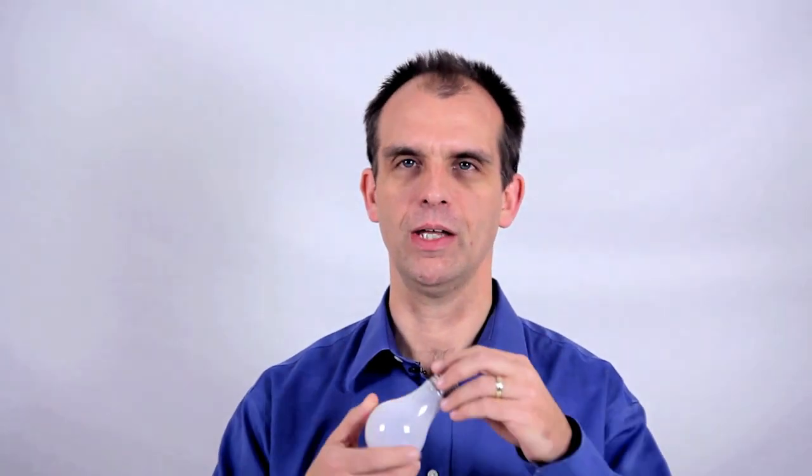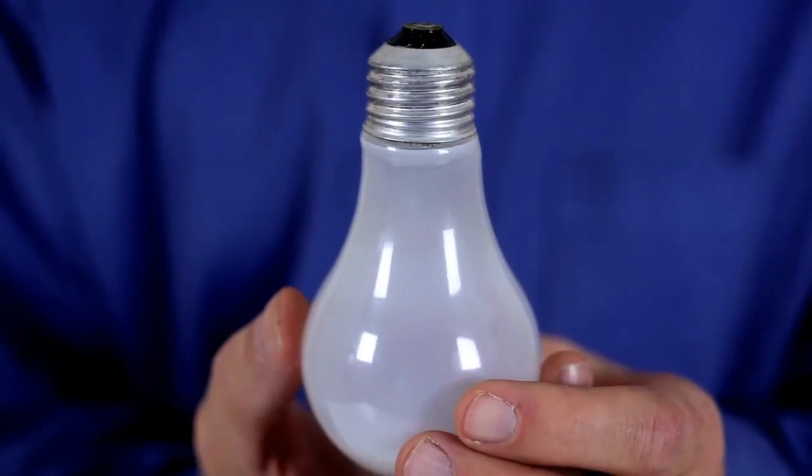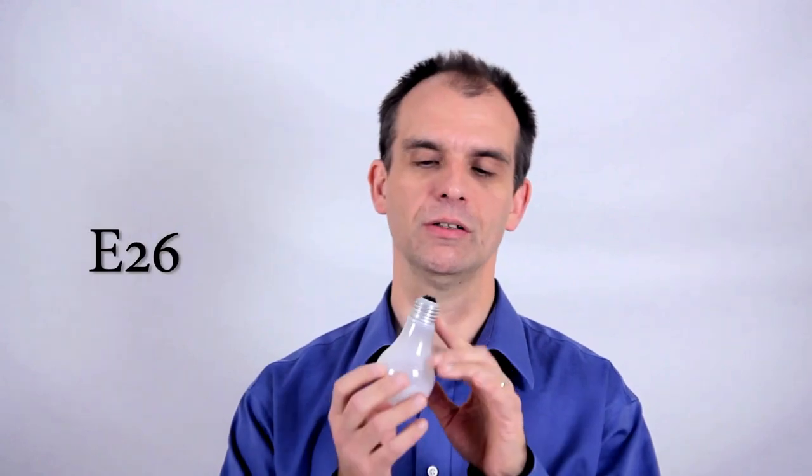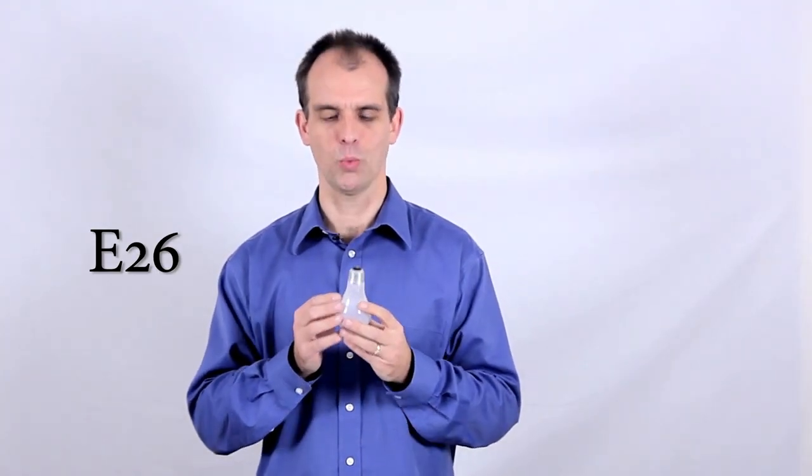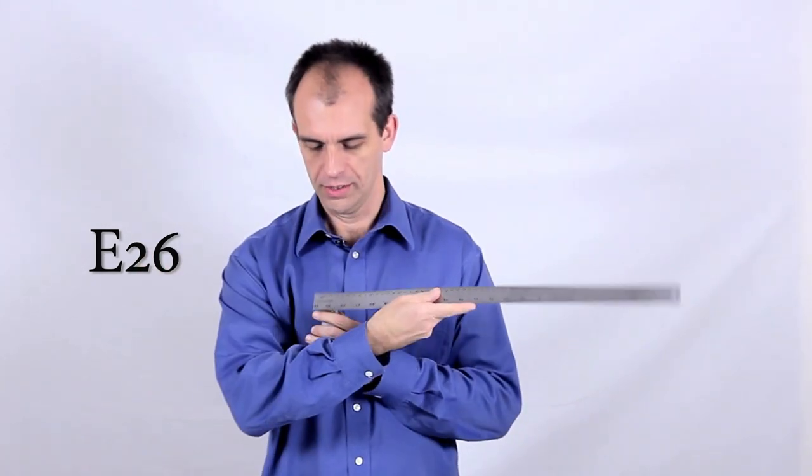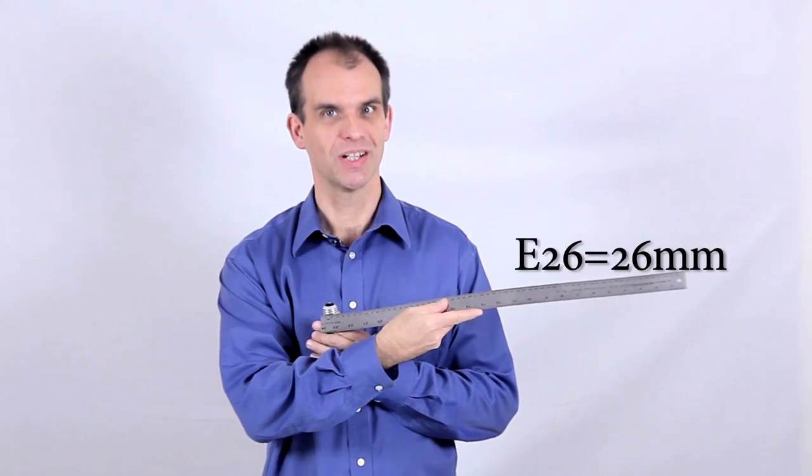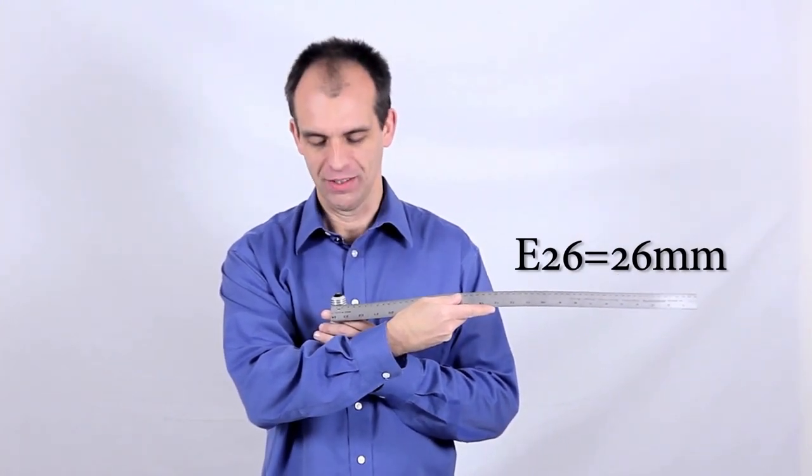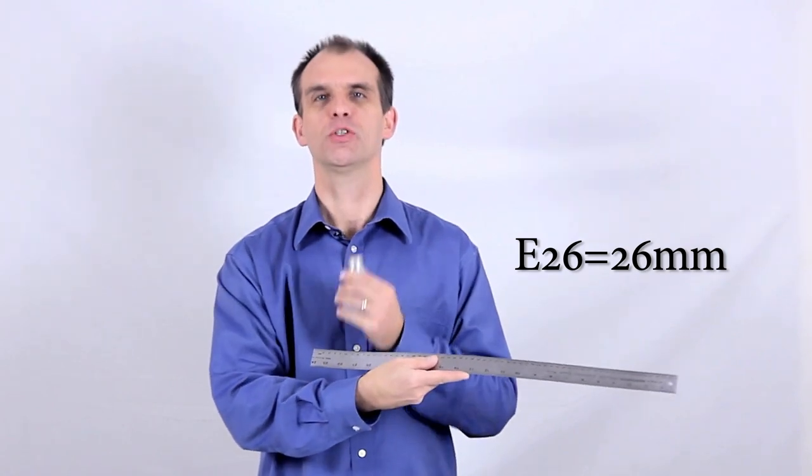Here we have good old Edison bulb with an Edison screw base. And yes, he did invent the screw base as well, clever guy that he was. This is a medium base, known as an E26, Edison 26, but this time it's not 26 eighths of an inch. What the heck is this? Well, for some reason, it's 26 millimeters. I don't know why, but there you go. The bases are measured in millimeters.